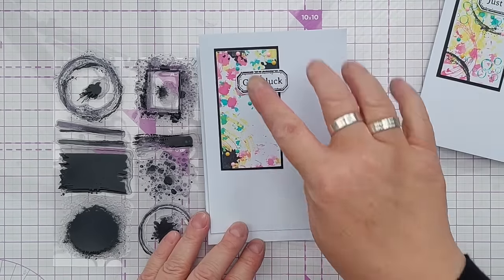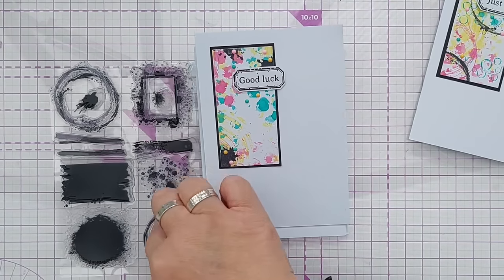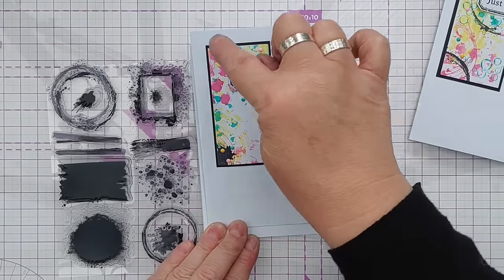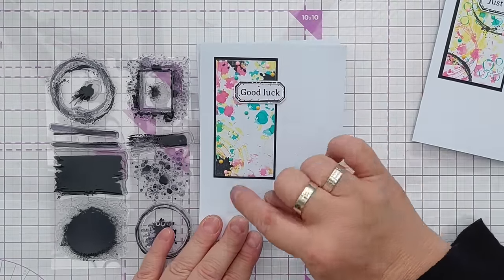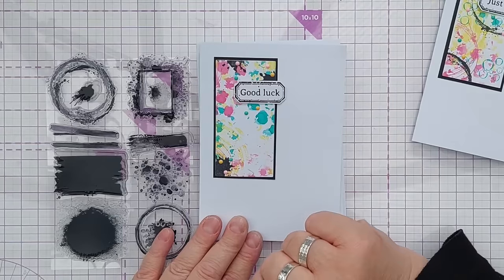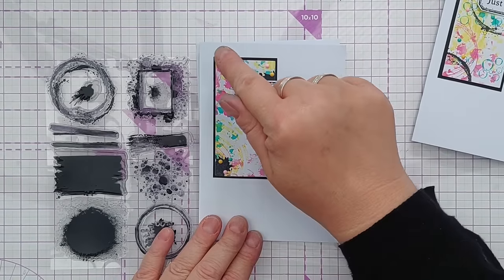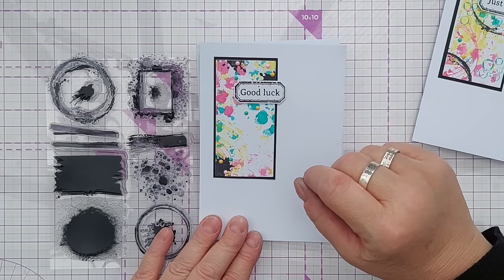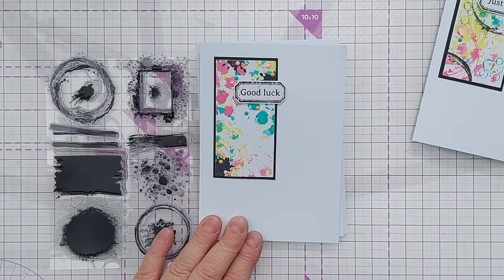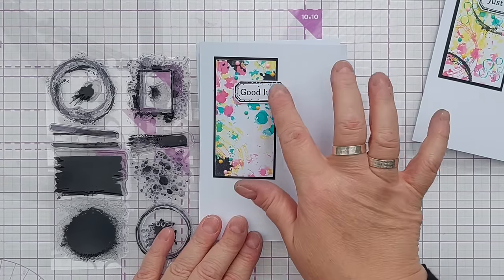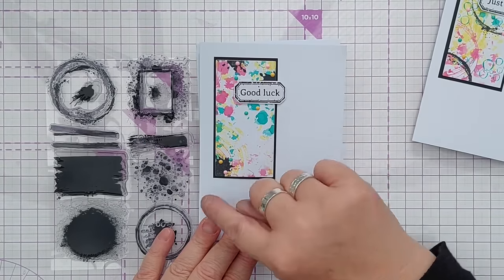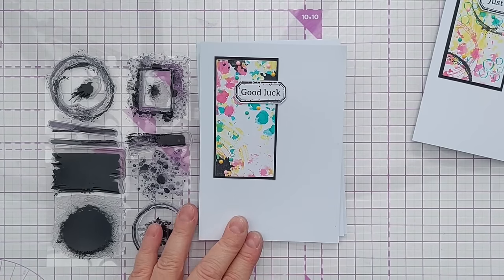I did another one in this corner here and used a splat stamp to add one, two, three splats and they act like anchors. There's one, two, three points of black or high contrast on here so your eye bobbles around the card. And I put the sentiment here next to this black dot because it sort of works in the visual triangle.